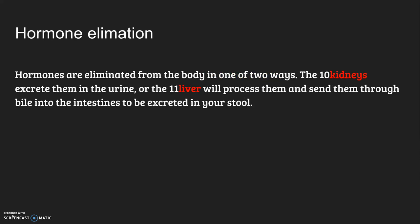Hormones that are finished or no longer needed or have already been used are eliminated from your body in one of two ways. The kidneys excrete your hormones in urine, and the liver processes them and sends them out through bile into the intestines where they're excreted in your stool.